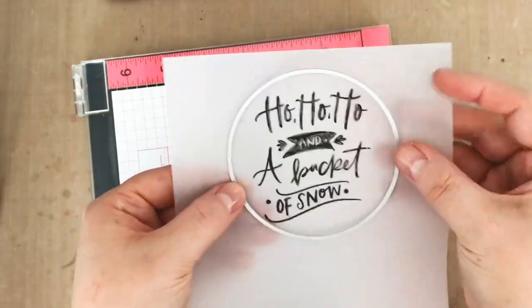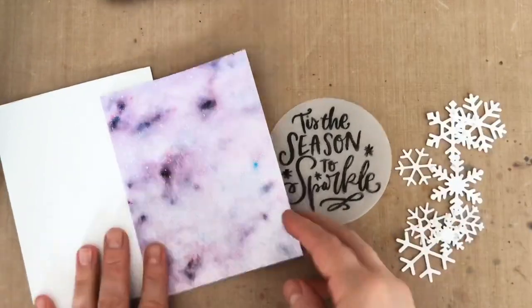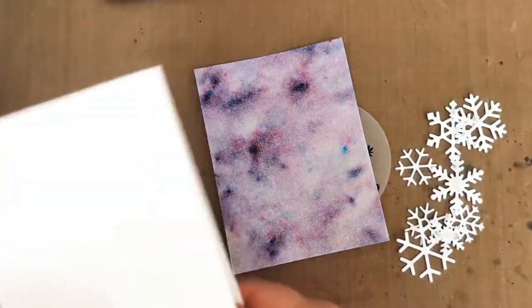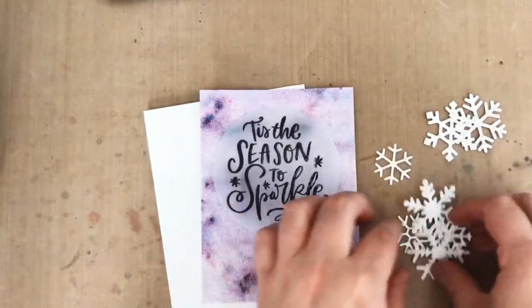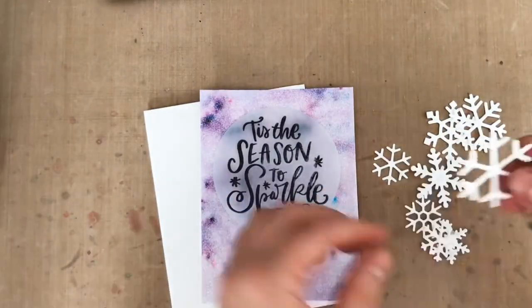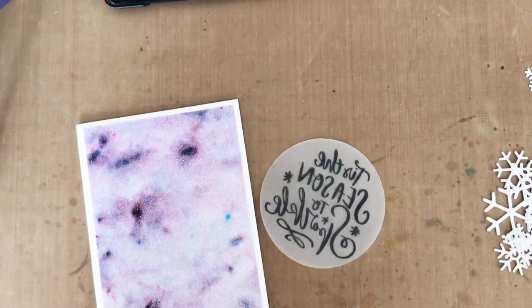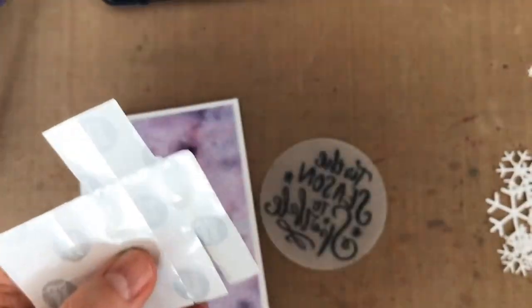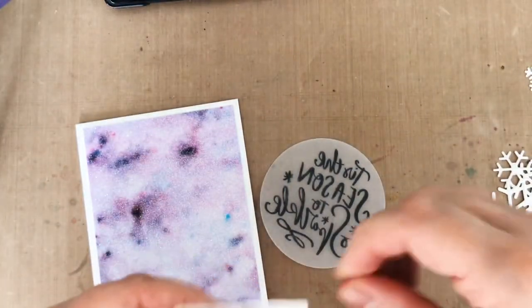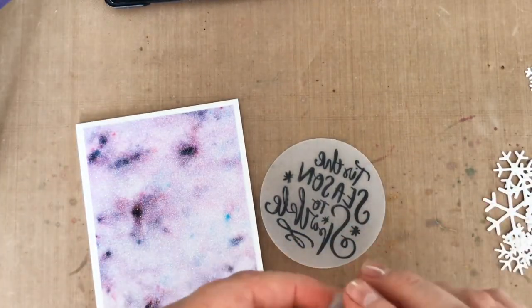Now I just need to assemble my cards. I've got a white top-folding A2 card, a glittered background that I cut down to four by five and a quarter, that vellum sentiment circle, and the snowflake die cuts. Vellum can be tricky to adhere because the adhesive shows through, so I'm using some mini glue dots. I've got some nonstick scissors, so I'm cutting them in half, and then I'm folding them to make them a quarter of the original size.